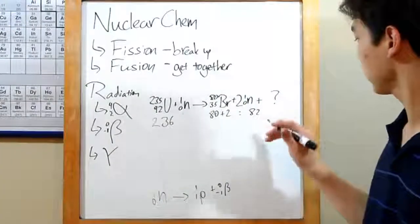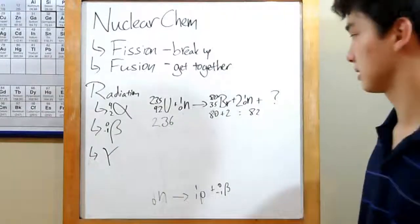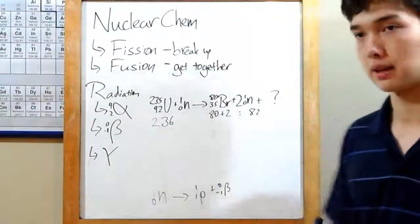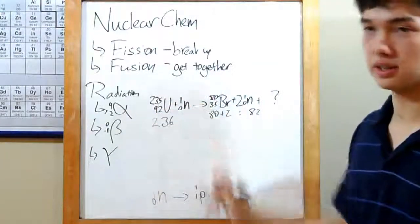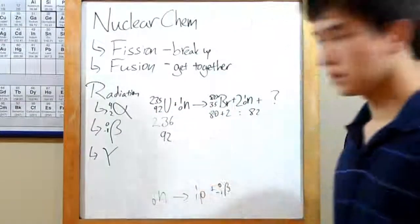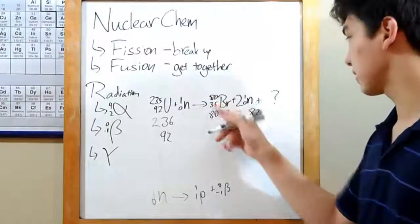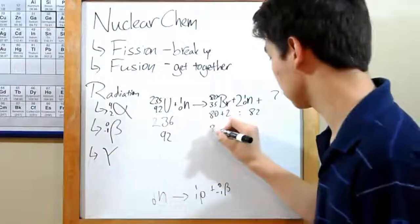Using that, we can find out the weight of our unknown substance. But let's keep going and fix up atomic number first. Here we have 92 protons and no protons from your neutron, so 92 total over here. Over on this side, we have 35 from bromine, none from the neutron, so just 35.